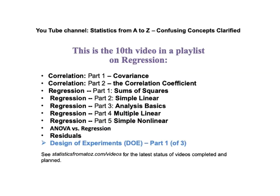This is the tenth video in a playlist on regression. It is called Design of Experiments, Part 1 of 3. Previously I had uploaded these other 9 videos on regression: 2 on correlation and covariance, 5 on regression, 1 comparing ANOVA to regression, 1 on residuals — those are the errors in the regression model — and then we'll have 3 on design of experiments, which is the discipline used to validate regression models.